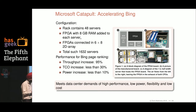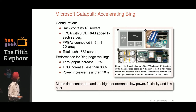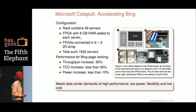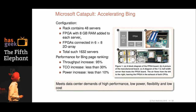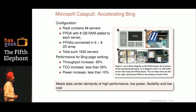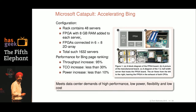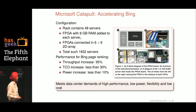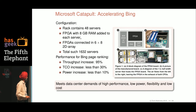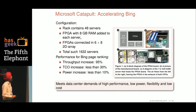Moving on to what Microsoft is doing: they have developed a mini board on which they put an FPGA with around 8 GB of RAM. They use a rack of 48 servers, and on each of these servers they put one of these tiny daughter cards. They connect these in a 6x8 2D array using high-speed point-to-point SAS links, each around 10 Gbps to connect a pair of FPGAs. They have deployed this experiment on around 1600 servers and what they were able to show is throughput doubling with only modest increases in total cost of ownership and power. They have been effective in demonstrating that for data center needs of high performance, low power, flexibility, and low cost, FPGAs can play an effective role.